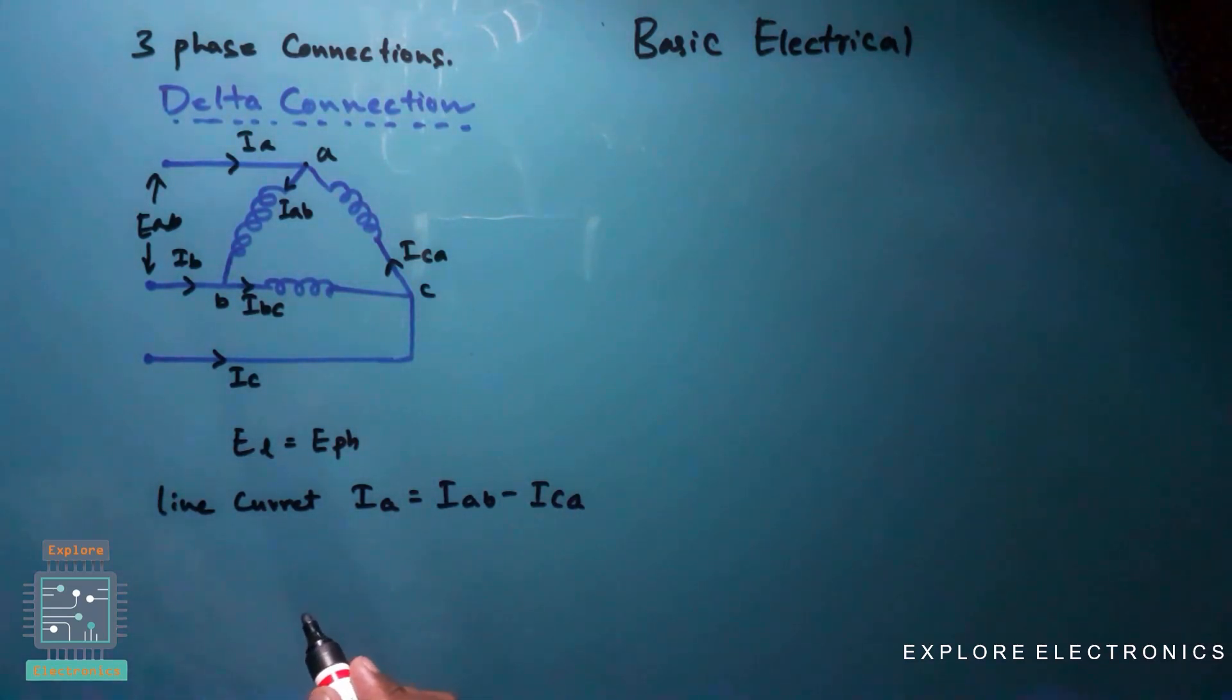So here again to derive the expression or the relationship between the phase and line currents, I need to go for the phasor diagram with respect to currents. So by taking these three currents I am going to write the phasor diagram.